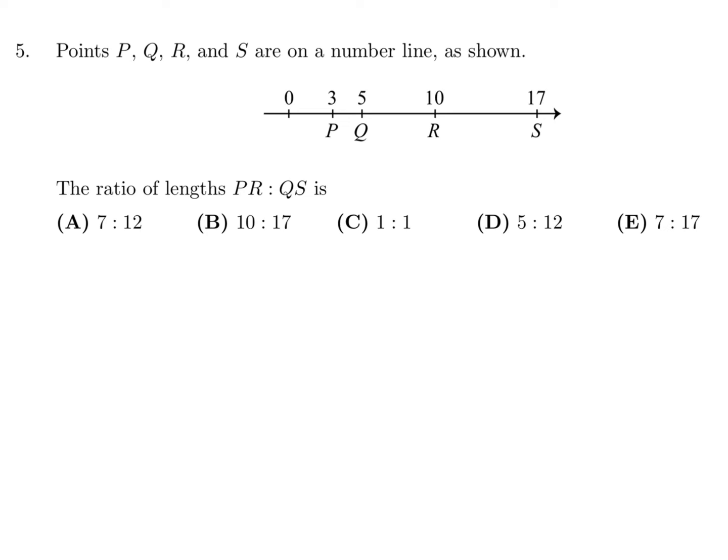Points P, Q, R, S are on a number line as shown. The ratio of the lengths PR to QS is... P to R is from 3 to 10, and that is 7. QS is from Q to S, and that distance is from 5 to 17, which is 12. And that's it. So number 5, the answer is A.